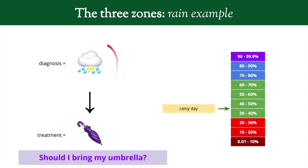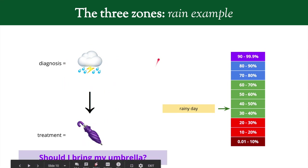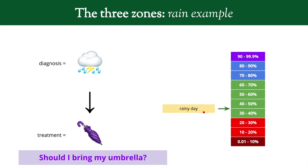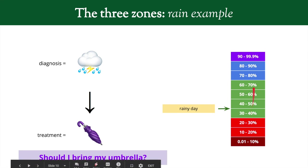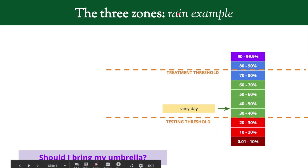The diagnosis is: it's going to rain. The treatment would be: bring an umbrella, because if it's going to rain you need one. If the meteorologist says the probability of rain is 40%, do you bring your umbrella or not? We don't have a yes or no — we're 40% sure it's going to rain.